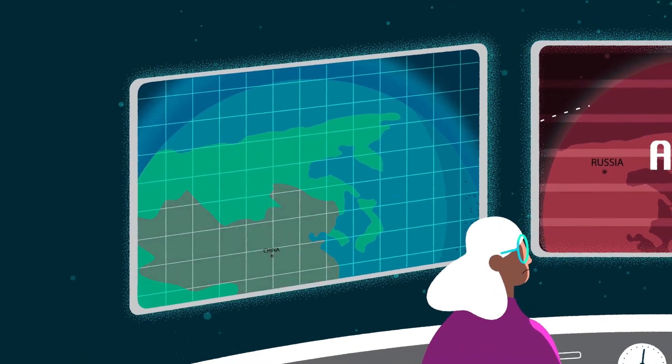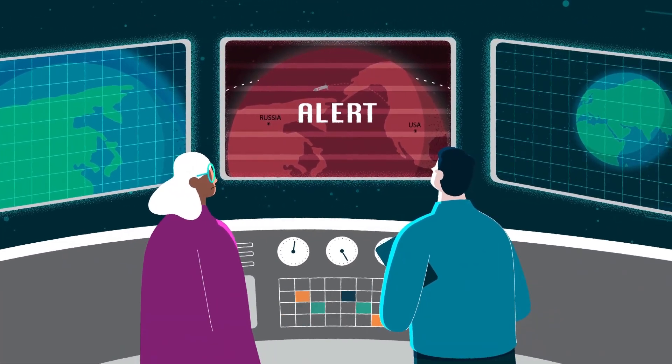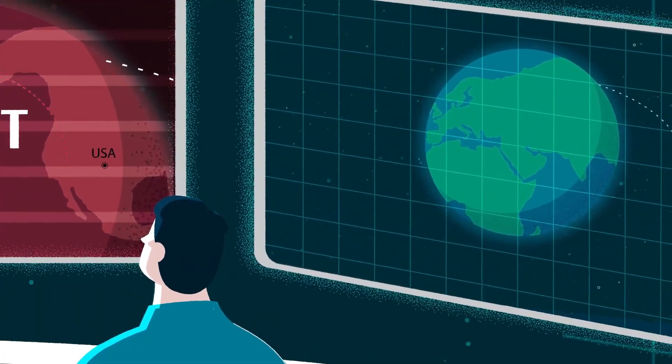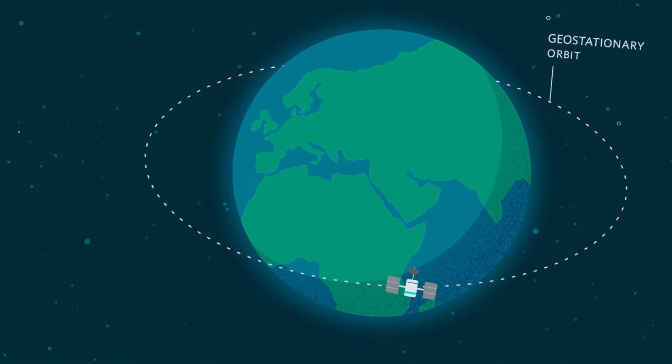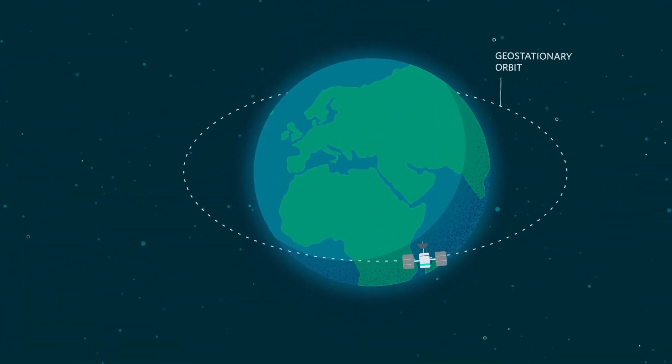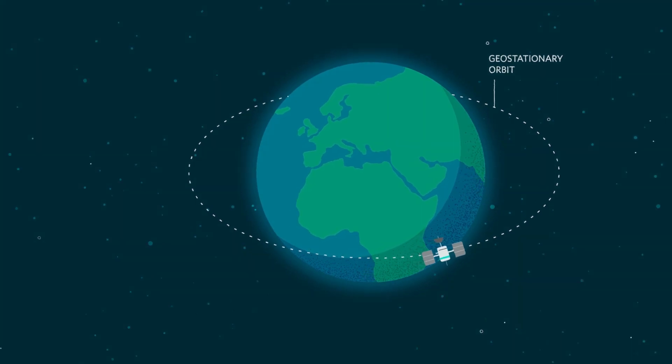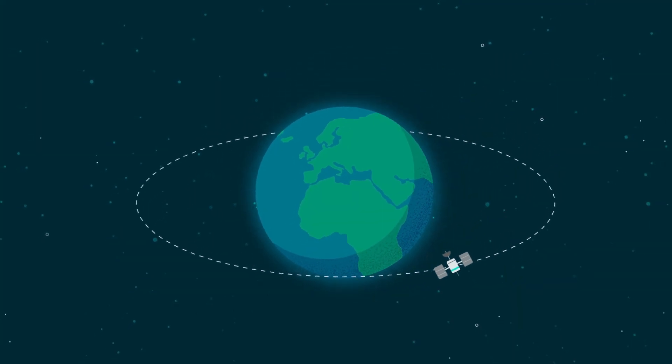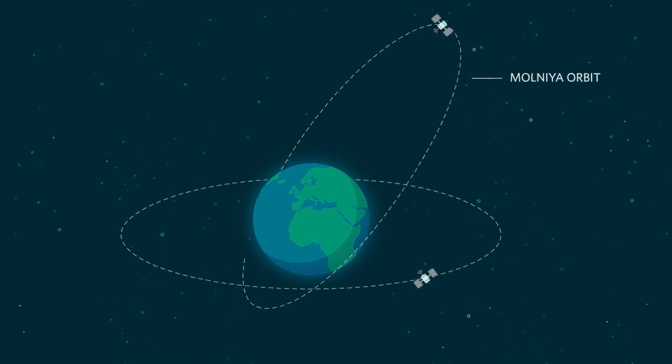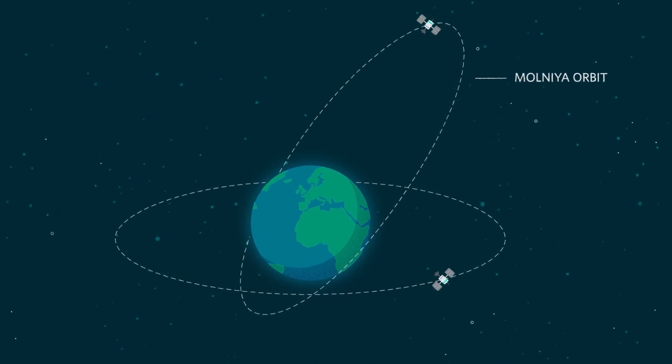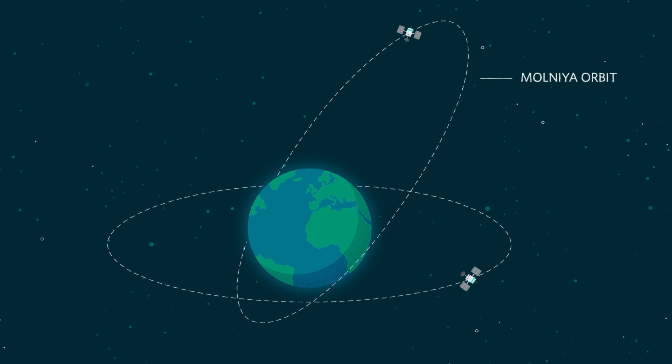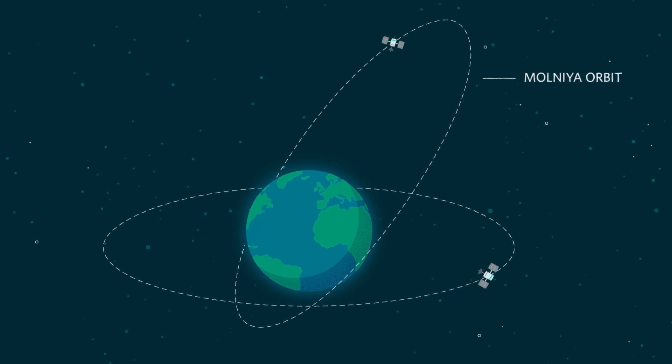High-altitude satellites play critical roles in communications and early warning. Some of these satellites are in geostationary orbit, hovering above the Earth's equator at roughly 36,000 kilometers. Others are in Molnia orbits, where they hang above the northern hemisphere at altitudes approaching 40,000 kilometers before quickly traversing the southern hemisphere.